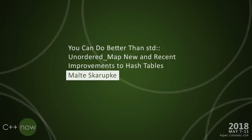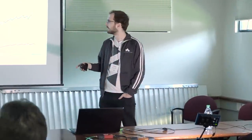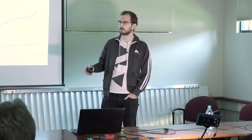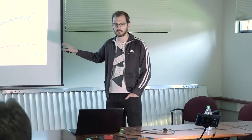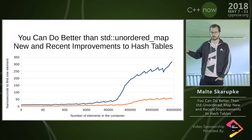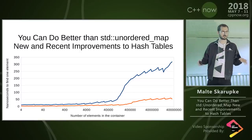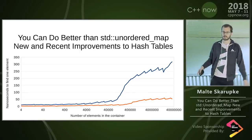Welcome to my talk: 'You can do better than standard unordered_map — new and recent improvements to hash tables.' I started you off with a graph showing the amount of improvement we're going to get throughout the talk. We started off with a really slow table and we're going to end with a really fast table. There'll be lots of graphs in this talk, so might as well start with one.